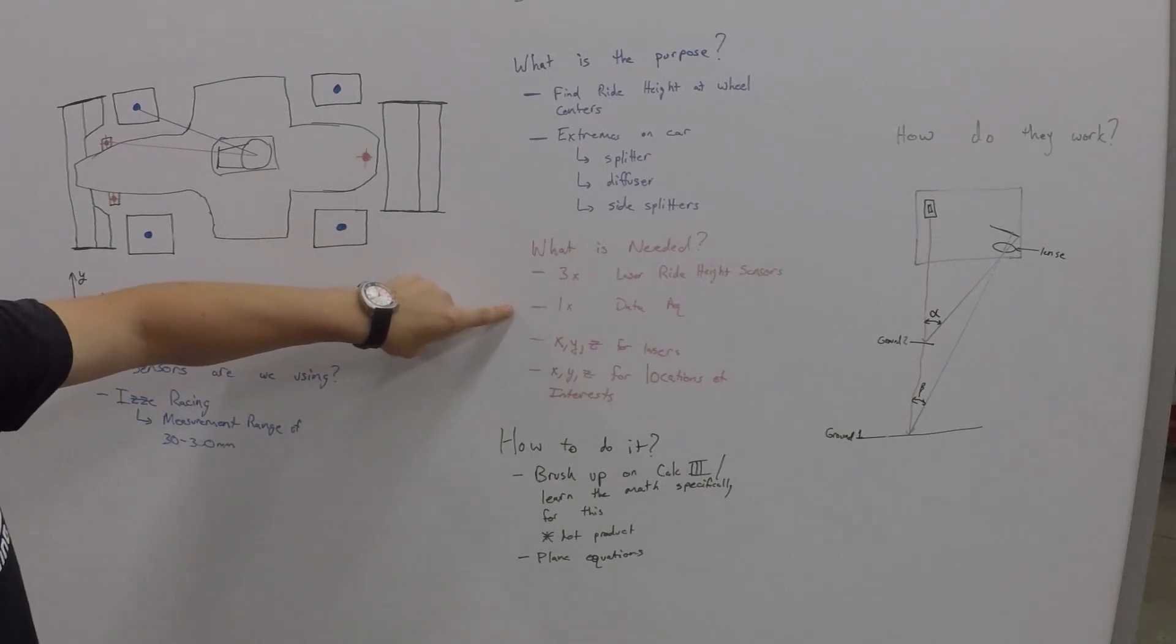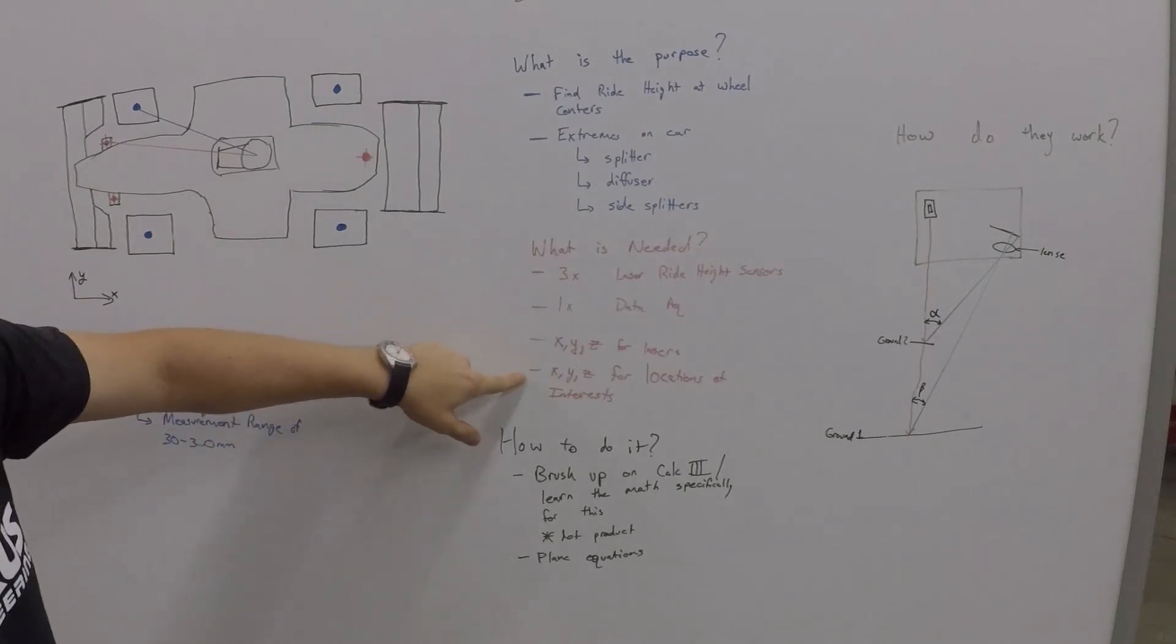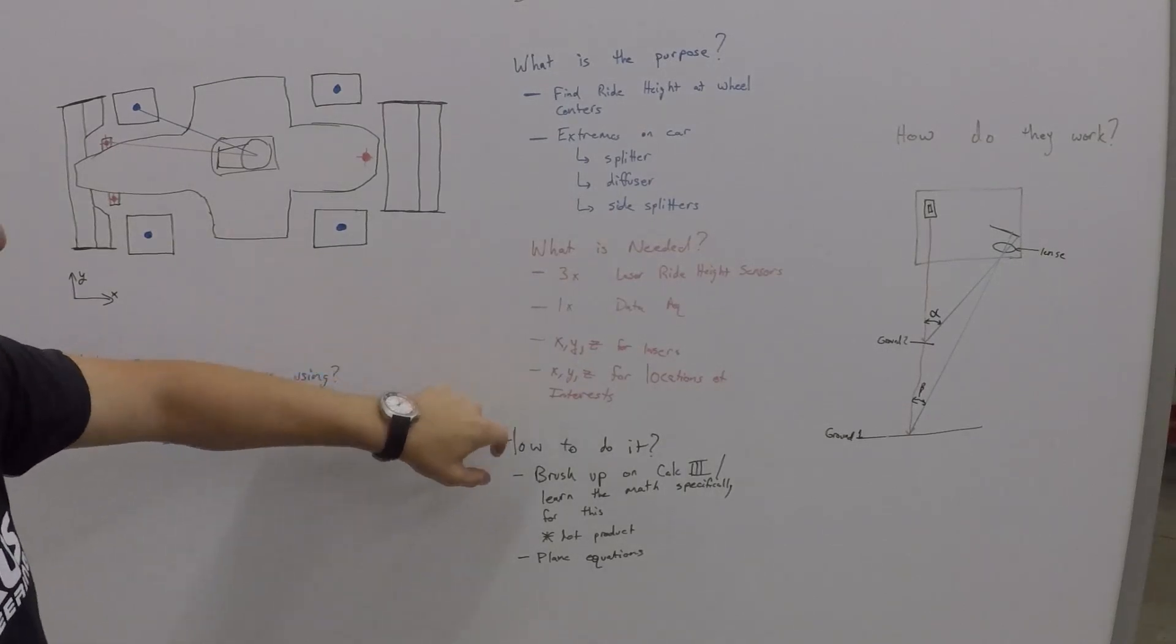You need a data acquisition system. You need to know your X, Y, and Z coordinates for lasers. So right here, this is the normal coordinate for a car. X goes this way. Y goes this way. And Z is going up. And then you need to know your X, Y, Z locations for the positions of interest.